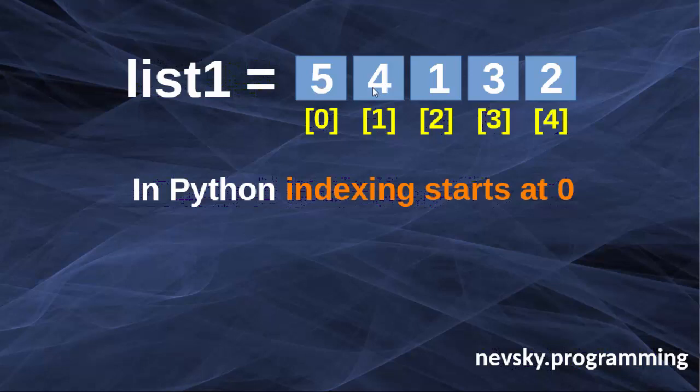So here we have 5 elements. 5 minus 1 is going to give us number 4, which is going to be the index of our last element.